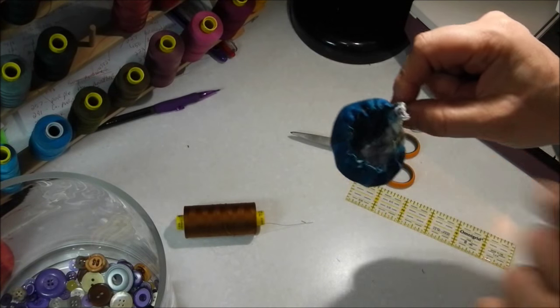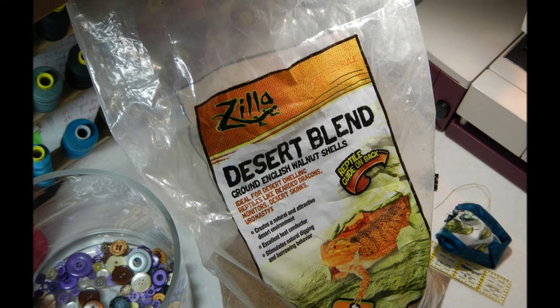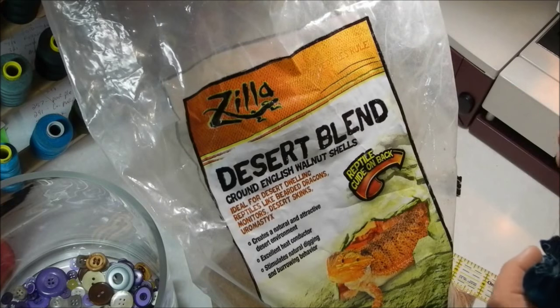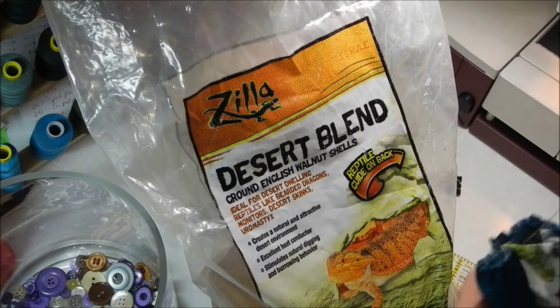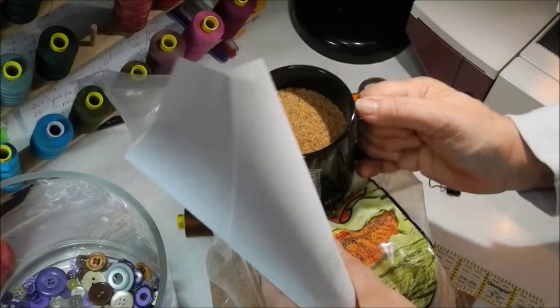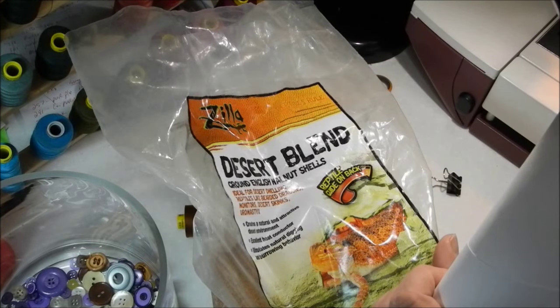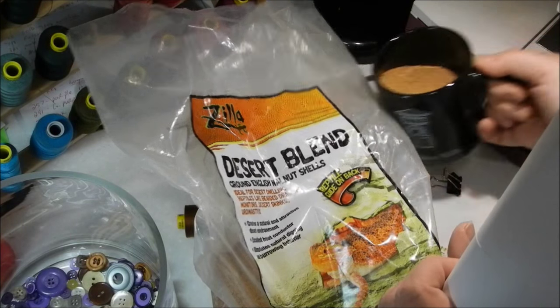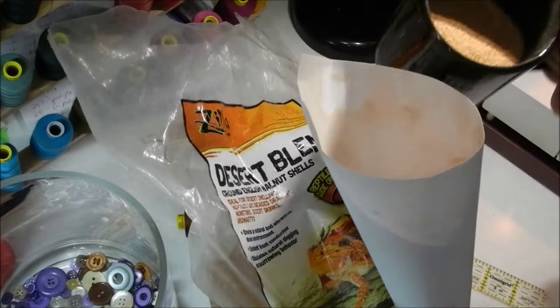And this is where we're going to fill it. I'm using Desert Blend Ground English Walnut Shells, and I have some in my cup here already. And I'm just going to pour it in to my little guy until I think he's got enough.